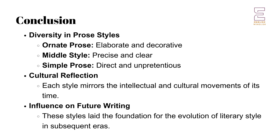The development of literary style in prose during this period is marked by a rich diversity of approaches, from the ornate and elaborate to the simple and direct. Writers like Browne, Taylor, and Drummond exemplify the ornate style, with their elaborate use of language and metaphor. In contrast, Hobbes represents the middle style, characterized by precision and clarity, while Walton's The Complete Angler showcases the power of simplicity in prose. These differing styles reflect the broader intellectual and cultural movements of the time, as writers sought to express their ideas in ways that were both innovative and true to their personal inclinations.